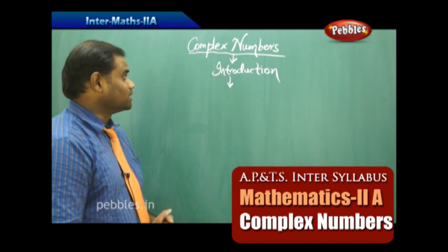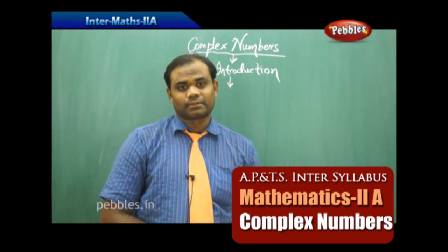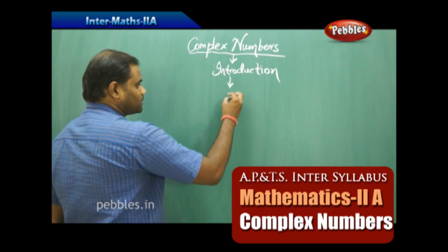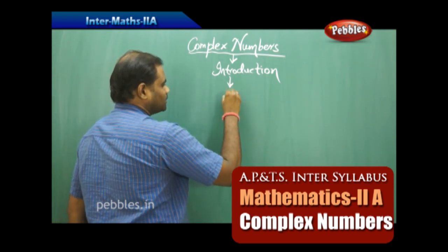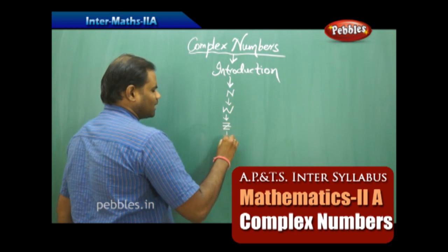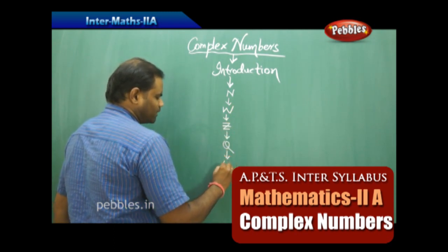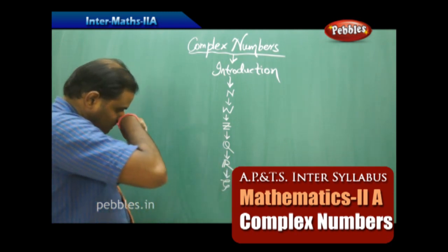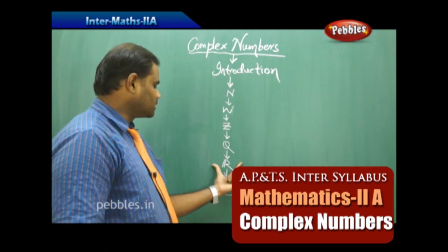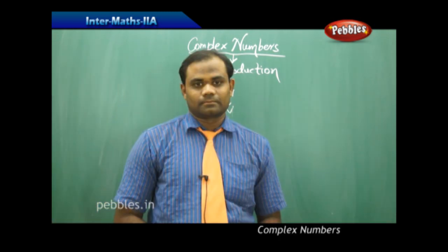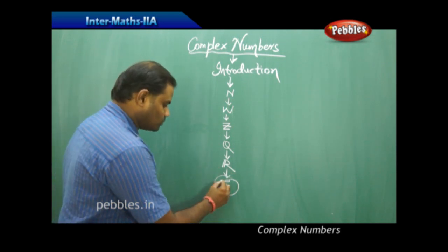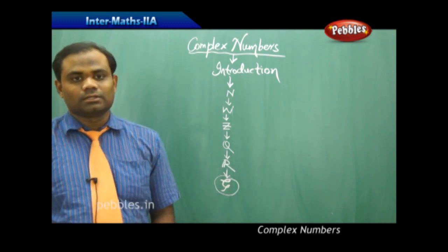The new chapter we are going to discuss today is about complex numbers. We have discussed the number system, which began with natural numbers, then whole numbers, then integers, then rational numbers, then real numbers, and finally complex numbers. Complex numbers are the highest set — all other numbers are included in them. They are derived from N, W, Z, Q, R and are generally denoted by the symbol C.